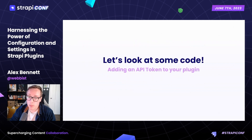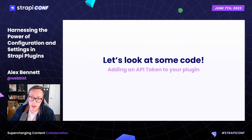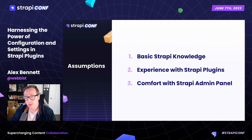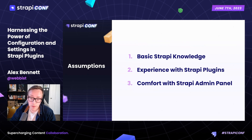Let's assume we've got a plugin making a call to a third-party service and we need an API token somewhere in our code. We're going to be looking at three methods to add an API key to our plugin. We're going to assume that you're familiar with Strapi's architecture and its core functions, that you may have some experience creating, installing, and configuring your own plugins, and that you're comfortable navigating and using the Strapi admin panel, which is an essential part of today's discussion.